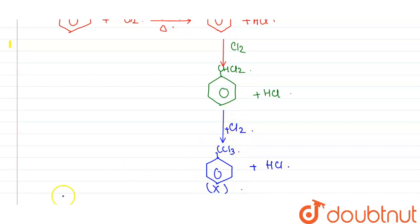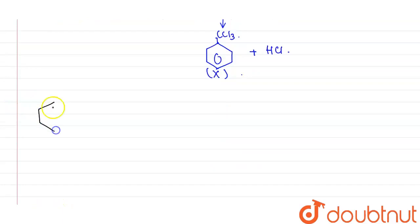So when this X will react with aqueous NaOH, let's see what the reaction will be. So, this is the carbon atom present here and three chlorine atoms are present here like this. Now, what happens is, aqueous NaOH is present. Now, substitution reaction will occur here and all the three chlorine atoms will be substituted by three OH groups.